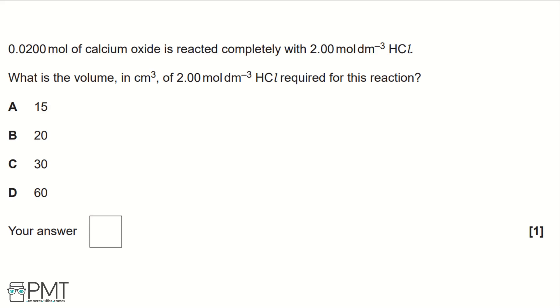Firstly we need to write the reaction so calcium oxide plus hydrochloric acid would produce calcium chloride and water. This is one of your MASH equations with metal oxide plus acid makes a salt and water.